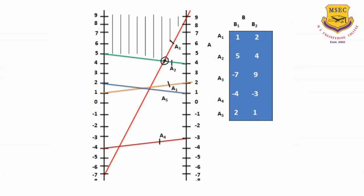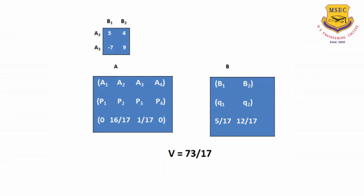The minimum loss occurs when A is playing A2 and A3 strategies; the other strategies are not going to affect the payoffs. So we consider only A2 and A3, and reduce this to a 2x2 matrix with A2, A3, B1, B2. Again in the same manner, we calculate P1, P2, P3, P4. Since A is not playing A1 strategy, P1 equals 0, and since he is not playing A4 strategy, P4 equals 0. We compute P2 and P3, which turn out to be 16/17 and 1/17, and the value of the game turns out to be 73/17. Similarly, B plays B1 and B2 with probabilities Q1 equals 5/17 and Q2 equals 12/17.